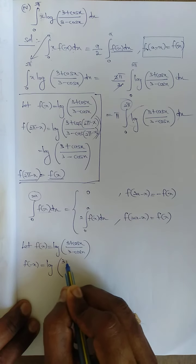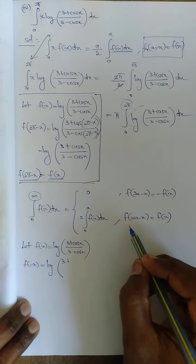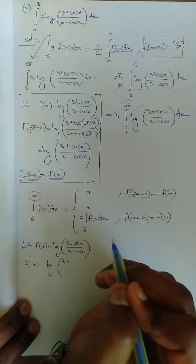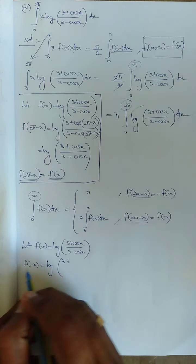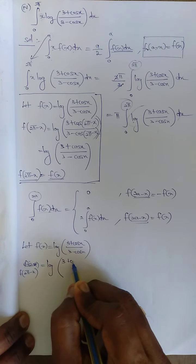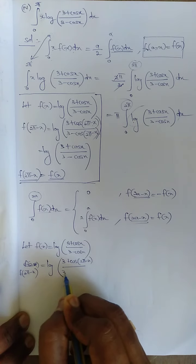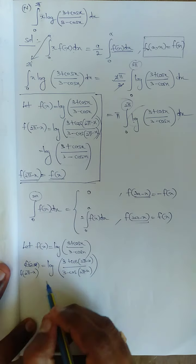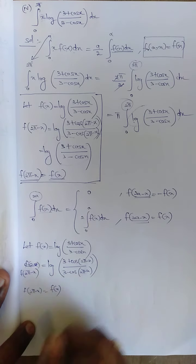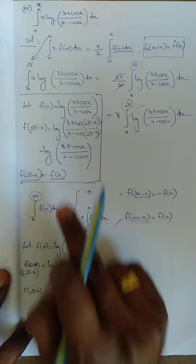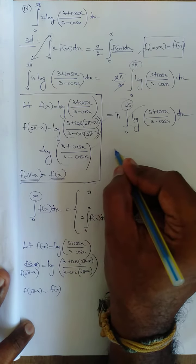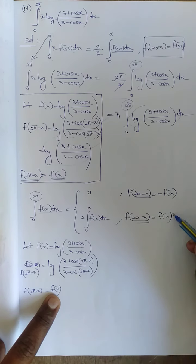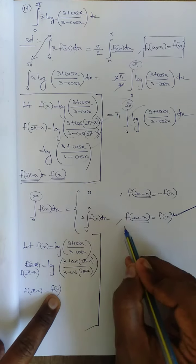In place of x, I apply 2a-x. Since 2a = 2π, I compute f(2π-x) = log[(3+cos(2π-x))/(3-cos(2π-x))]. We just showed that cos(2π-x) = cosx, so f(2π-x) = f(x). Since f(2π-x) = f(x), I can apply the second case of the property.